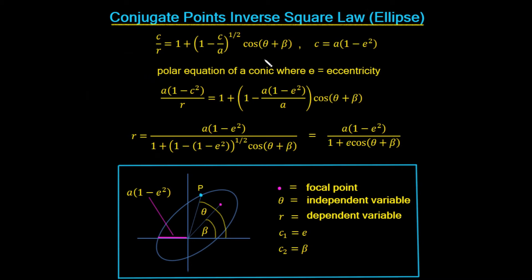We've seen in the first course that if we had an object of mass m attracted to some fixed point O under an inverse square law, it's going to map out an ellipse. We derived that in the first course, so you can always look at that as a reminder. This is the equation we derived — the polar form of a conic — where E is the eccentricity. Let's have a look at this in the graphical calculator first, and then we'll talk through our equations.